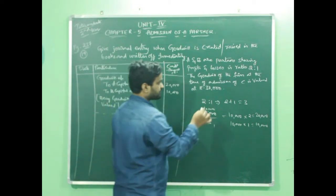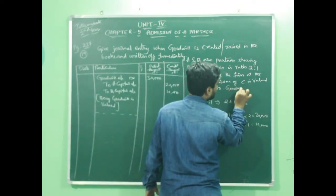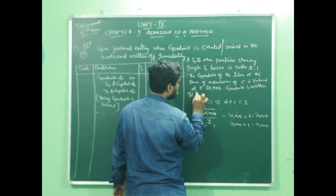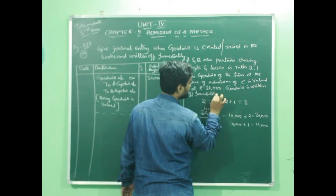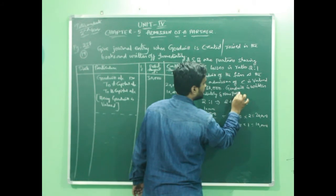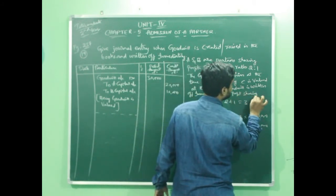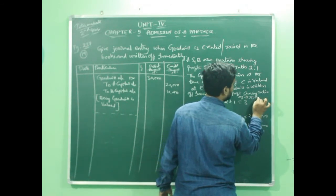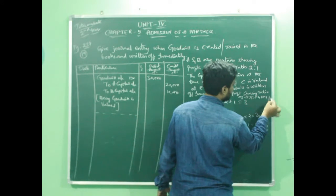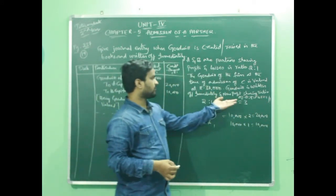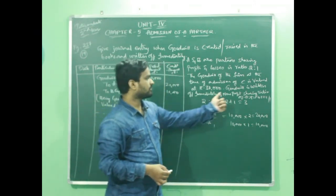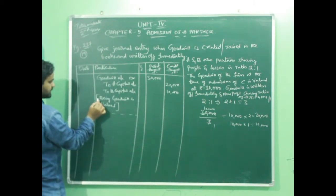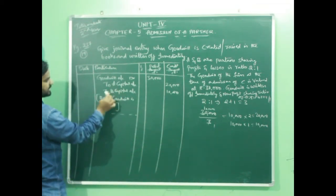Now, continuing the question: goodwill is written off immediately. The profit sharing ratio of A, B, and C is 1:1:1 — that is, their profit sharing ratios are equal. So before writing it off, first it should be valued. For that, we have written the journal entry as: Goodwill Account debit 30,000; to A Capital Account 20,000; to B Capital Account 10,000. The narration was: being goodwill valued, or goodwill credited to old partners in their old profit sharing ratio.